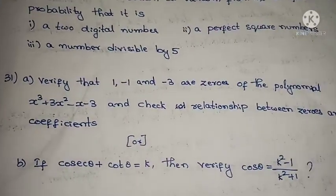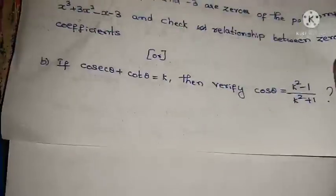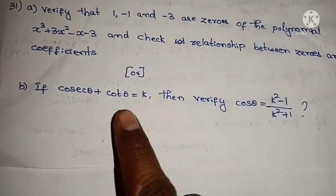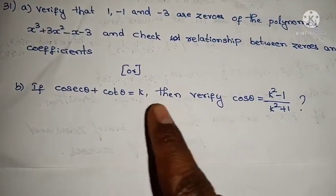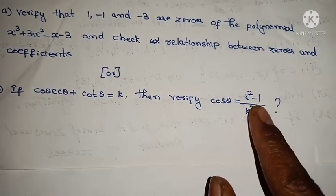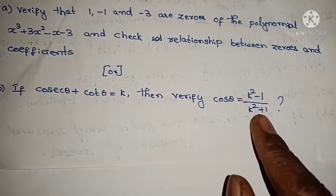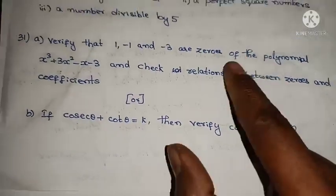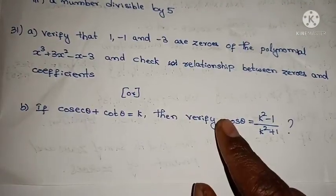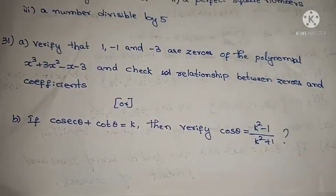Part B, the choice problem: If cosecant theta plus cot theta equals to k, then verify that cos theta equals to (k² - 1) / (k² + 1).